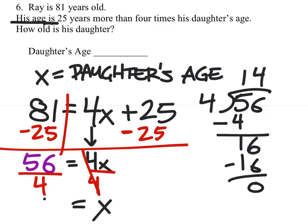And we find that X is 14. So, it was the daughter's age. It looks like it's 14 years.